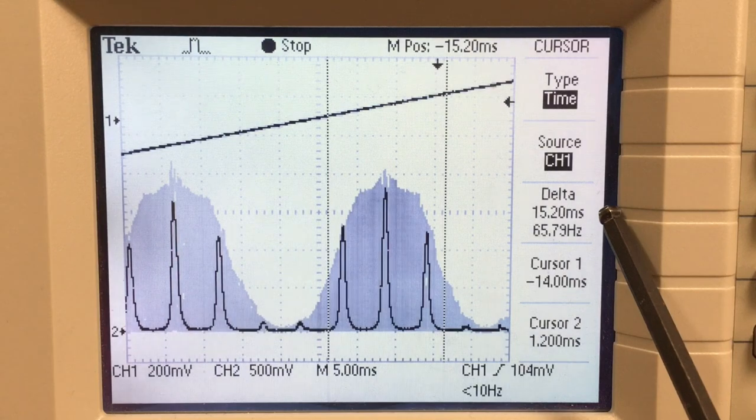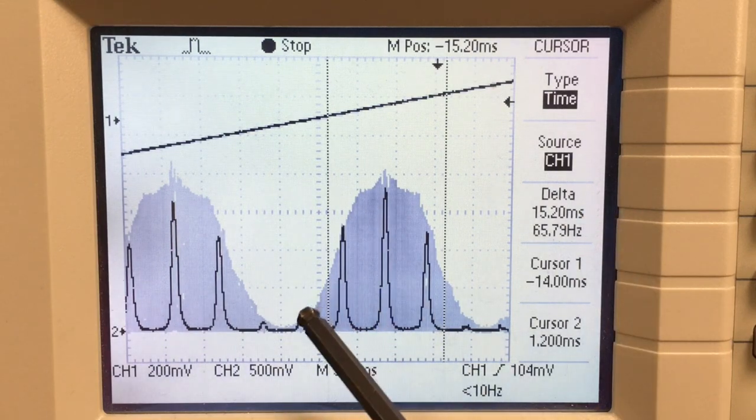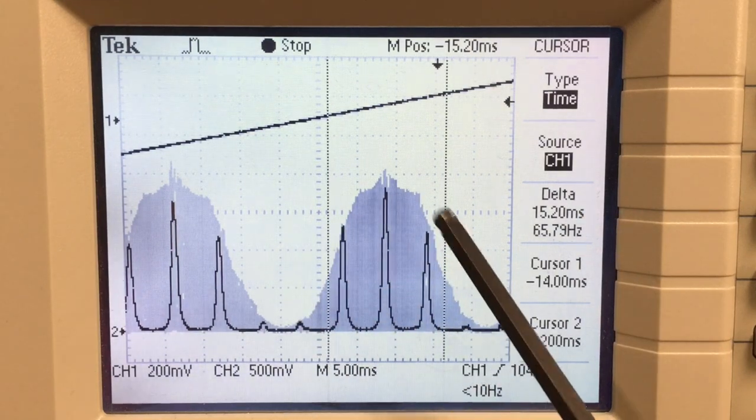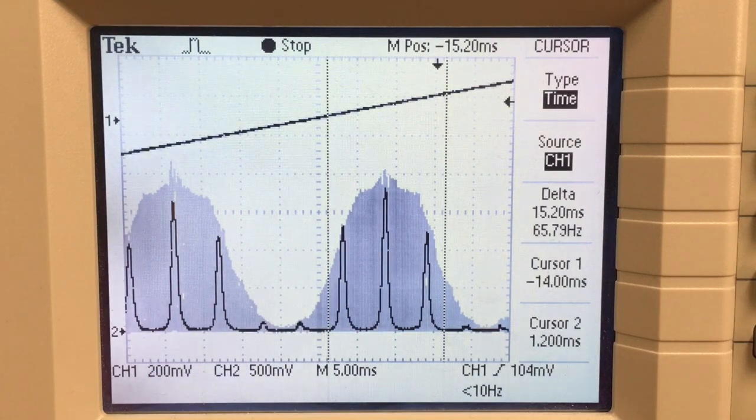This width tells us something about the temperature distribution of the atoms that are emitting the light.